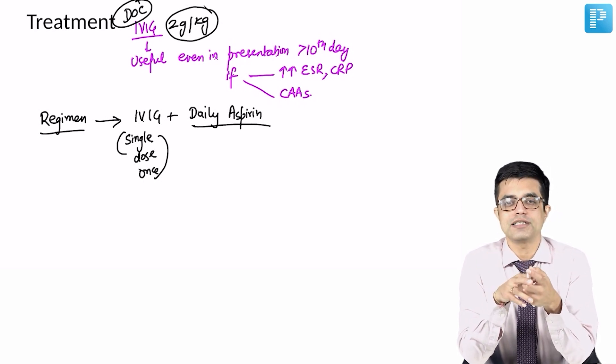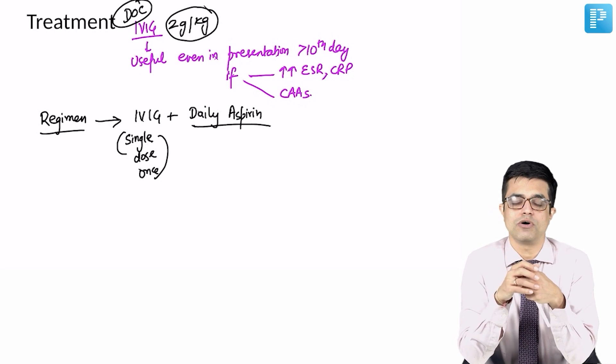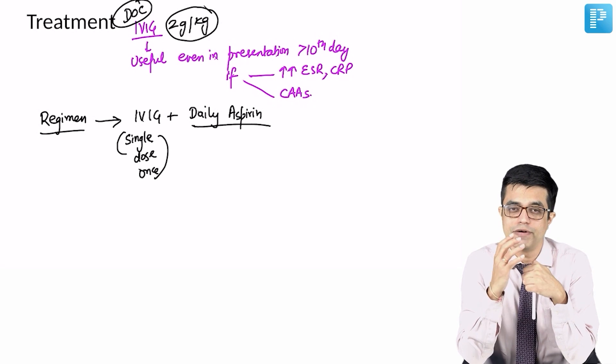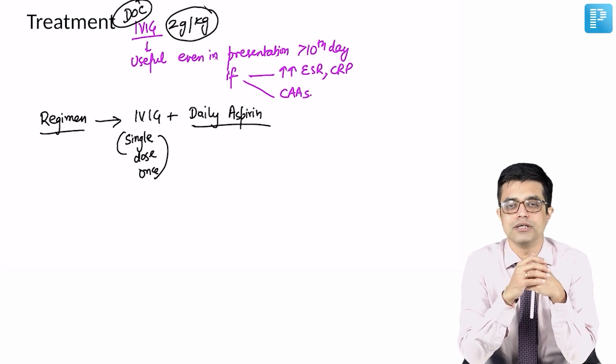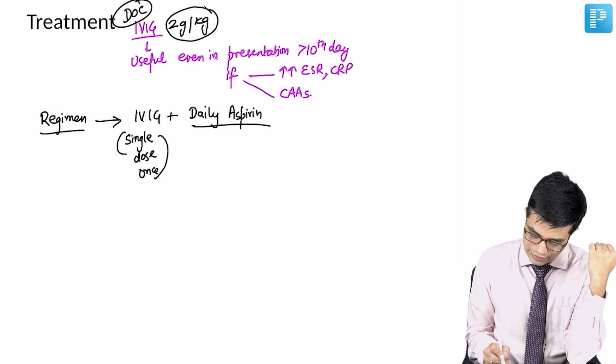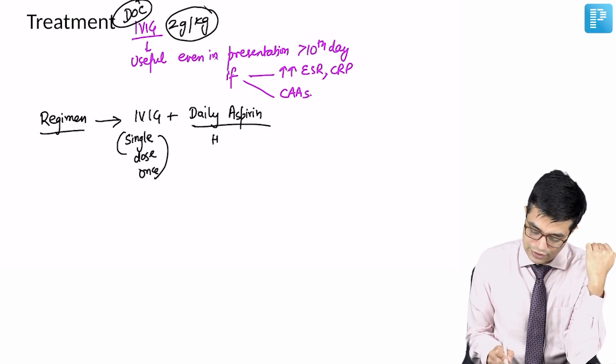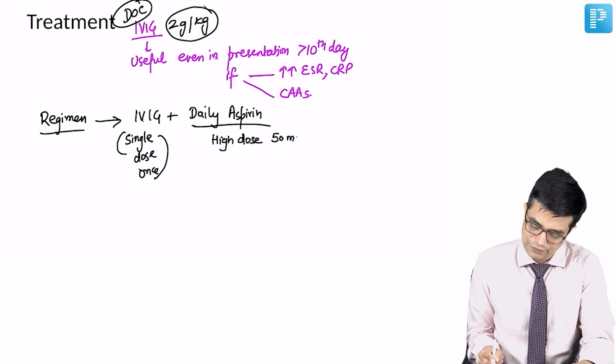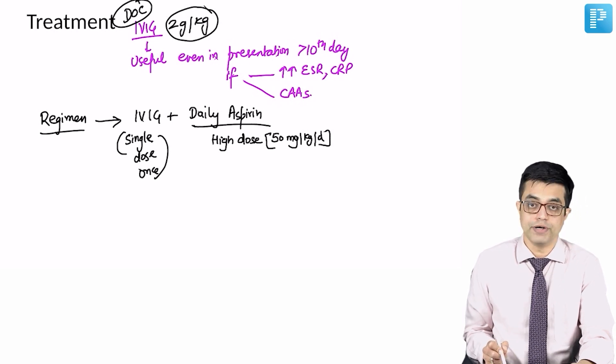After that, aspirin is given in low dose for a longer duration. Low dose aspirin is antiplatelet, antithrombotic. To prevent thrombus formation and cardiac complication, we give low dose aspirin. So, first initially we start with high dose aspirin. High dose aspirin is approximately 50 milligram per kg body weight per day in 3 to 4 dividing doses.